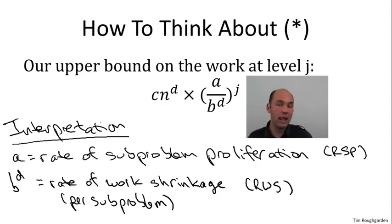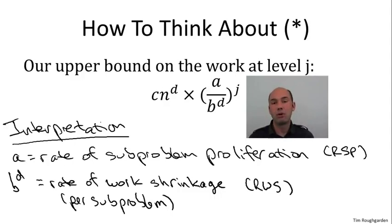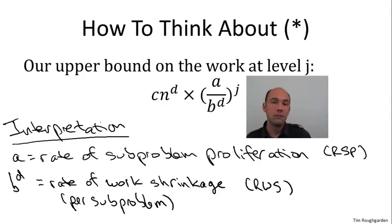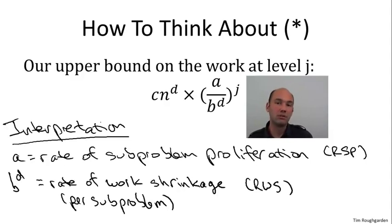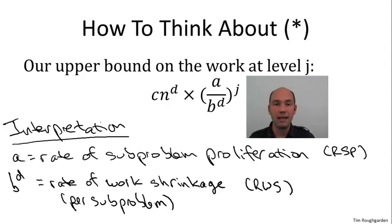The question then is what happens in this tug of war between the two opposing forces. The three cases of the master method correspond to the three possible outcomes: a tie; the forces of evil win, meaning A is bigger than B to the D; and the case where good wins, meaning B to the D is bigger than A.